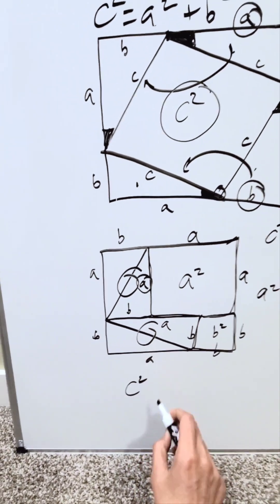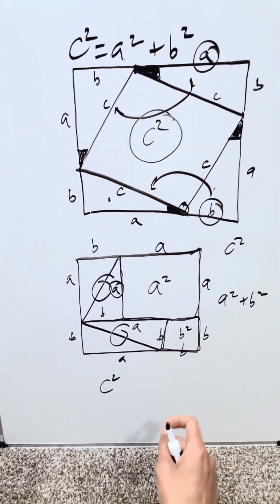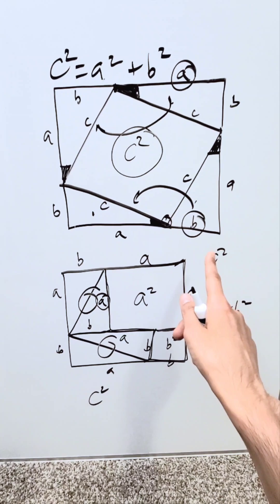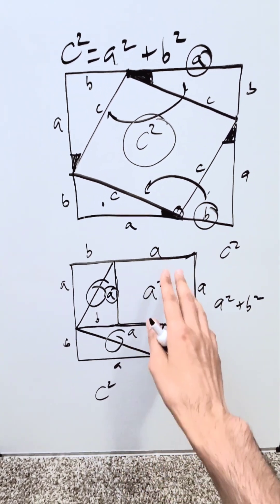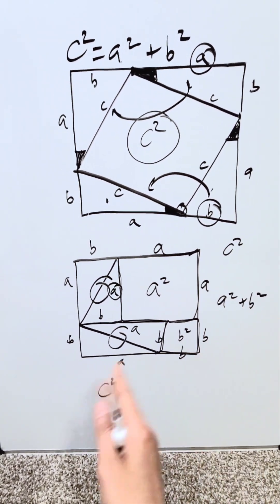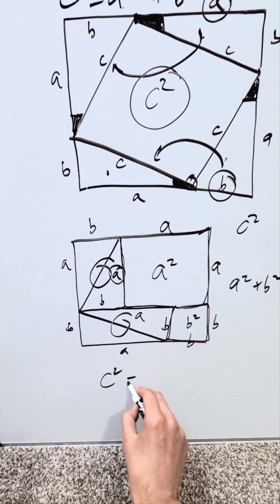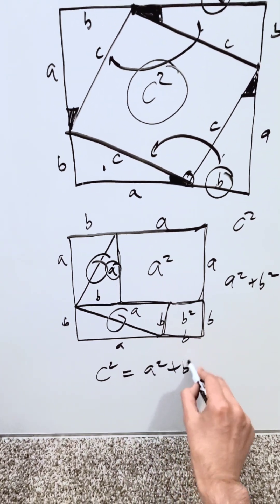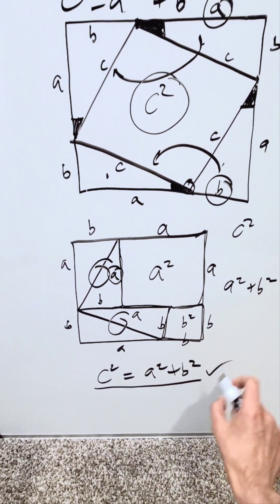Once you undergo this manipulation, you're left with two sets of residual areas, which must be equal to each other, because we never added anything. We only manipulated our triangles, and we looked at what remained after we threw those triangles out. On one side, we have c squared. On the other side, we have what remains, a squared plus b squared, and the theorem has been proven.